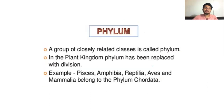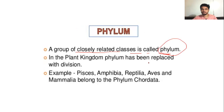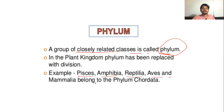Then phylum, which is a higher category than class. What will be in phylum? Closely related classes. Closely related classes will be grouped into one phylum. For example, Amphibia, Reptilia, Aves, and Mammalia all belong to the phylum Chordata. So phylum is this grouping of closely related classes.